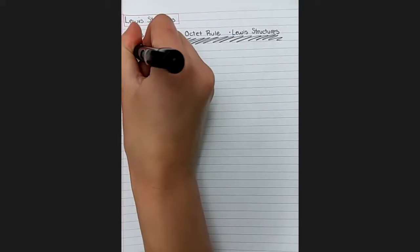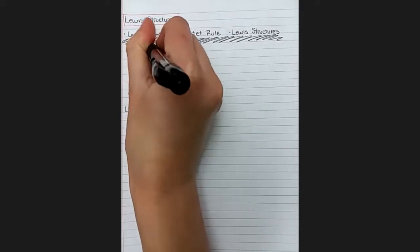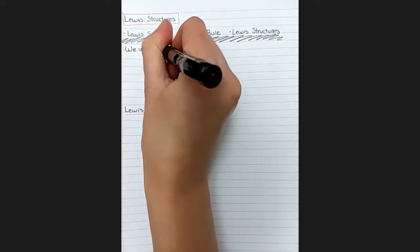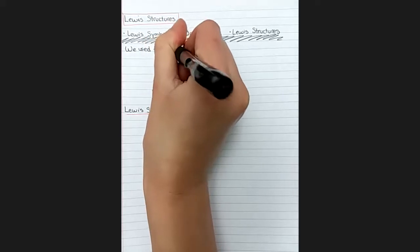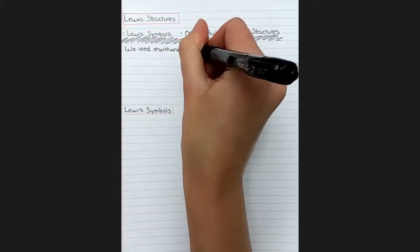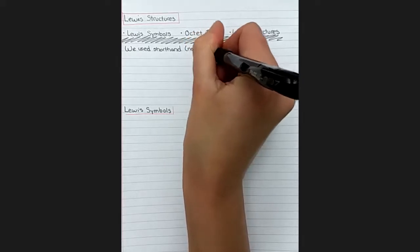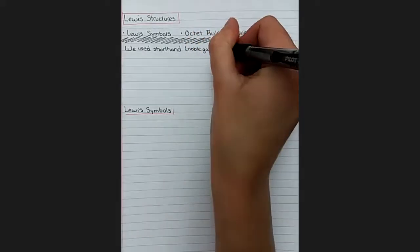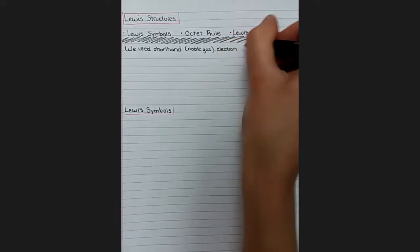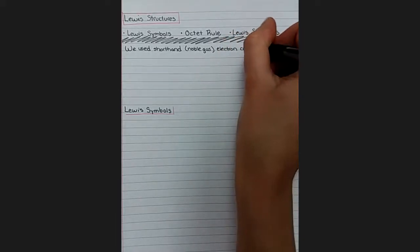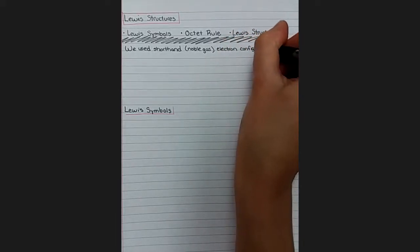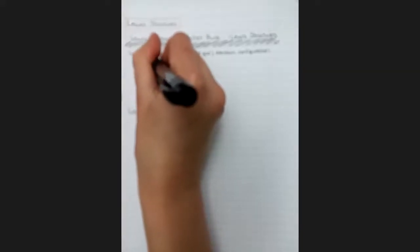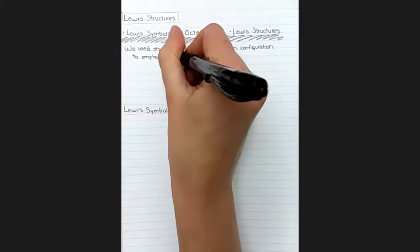So let's review how this connects to last time. In the past, we used shorthand electron configuration, sometimes called noble gas configuration. We wrote it in shorthand to emphasize the importance of the valence electrons. Those were the only electrons that were included in the notation after the noble gas in brackets.